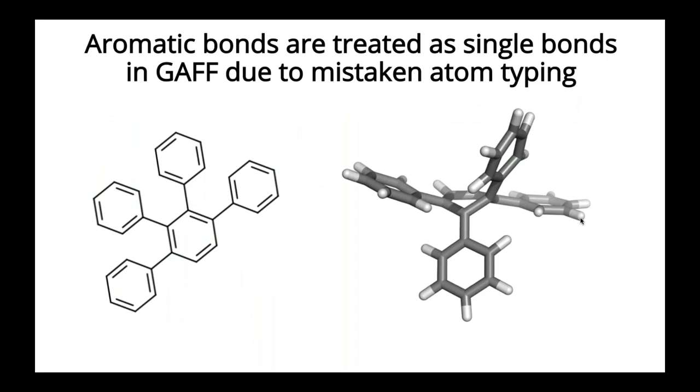And we have some concrete examples of where this type of assignment causes problems in traditional force fields. So GAFF and GAFF2 do a misassignment of atom types along this center aromatic system, causing the middle ring to buckle because it's assigned the incorrect torsions on that center ring.